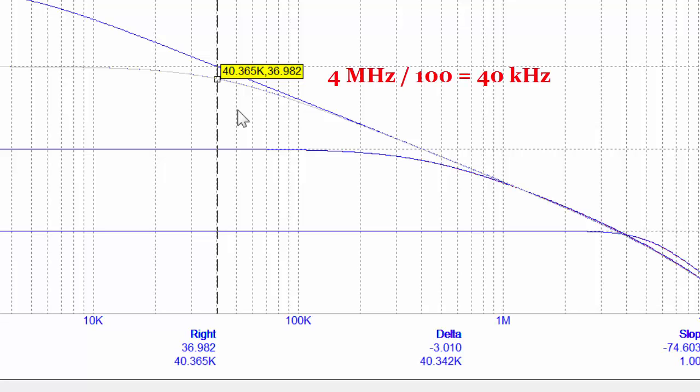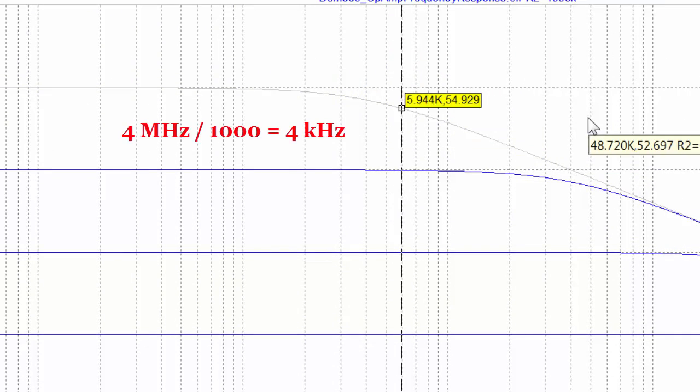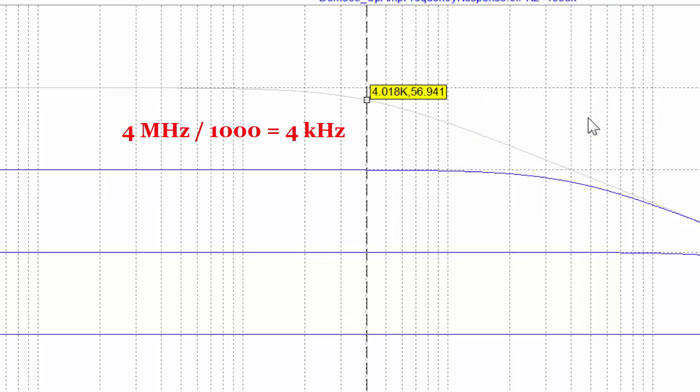If I look at a gain of a thousand volts per volt, I expect the 3 dB frequency to be at about 4 kilohertz, which is what the simulation shows.